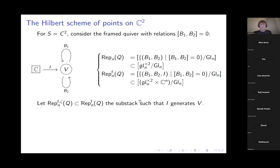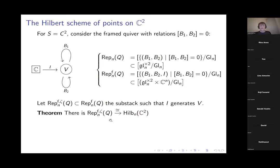I claim — it's a theorem, an instance of the ADHM construction — that this space is isomorphic to Hilb_n(ℂ²). Let me explain the heuristic. A simpler statement: the full space of representations of the unframed quiver, Rep_n(Q), is identified with a moduli stack parametrizing compactly supported coherent sheaves on ℂ².